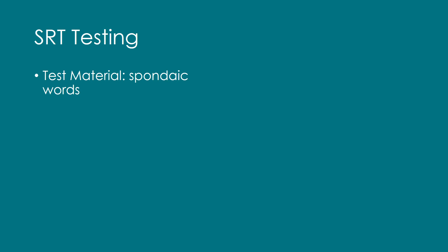SRT testing uses spondaic words, which are two-syllable words with equal stress on each syllable — for example, the word "airplane." The audiologist would say a list of spondaic words to the listener and they would repeat them back to the audiologist or indicate the exact word.